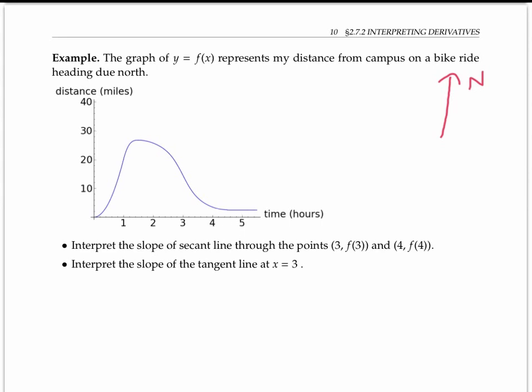Now let's get to the questions at hand. Consider these two points: three, f of three, and four, f of four. We want to interpret the slope of the secant line through those two points. Slope is change in y over change in x, and y here is distance and x here is time.